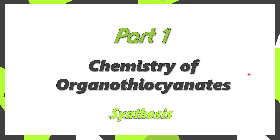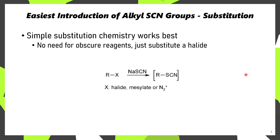Part 1 will be discussing some of the chemistry of synthesizing organothiocyanates. If you're looking to synthesize alkyl thiocyanates, the most straightforward way is through the substitution of a halide or a pseudohalide, such as a bromide, a mesylate, or even a diazo compound. This is really straightforward — just your typical substitution chemistry, either in a protic solvent or in a polar solvent like DMF. You can monitor these reactions by TLC, as the resulting thiocyanate tends to be more polar than the starting halide.